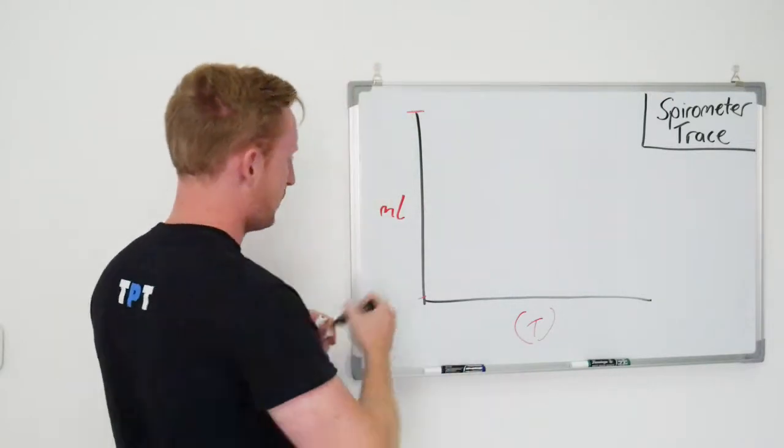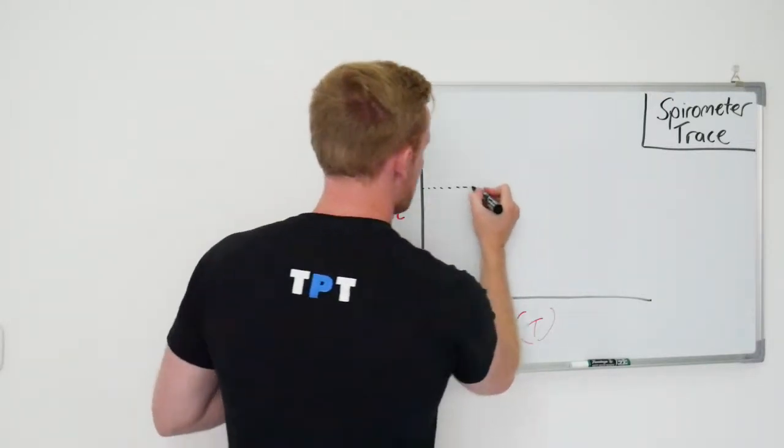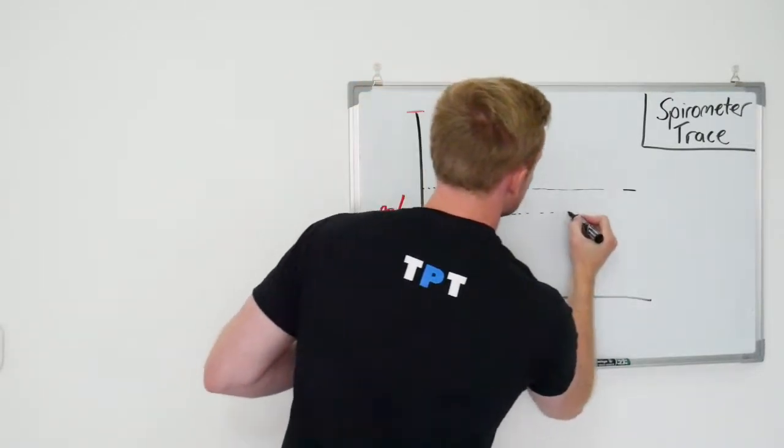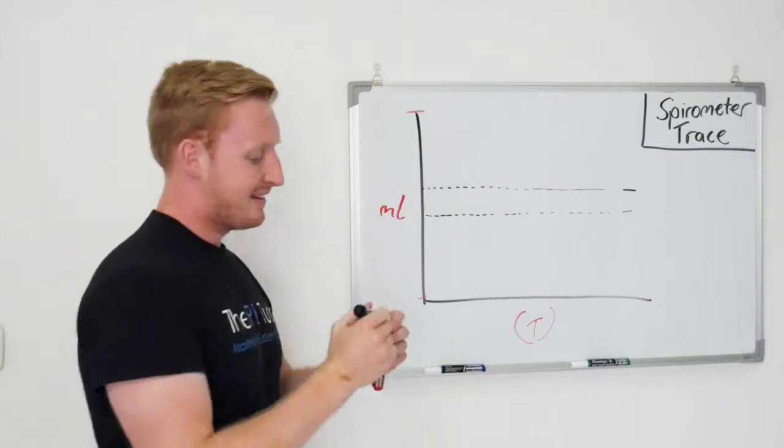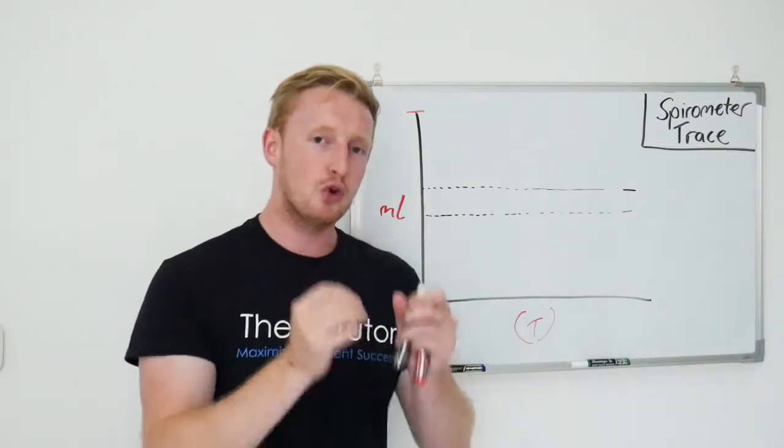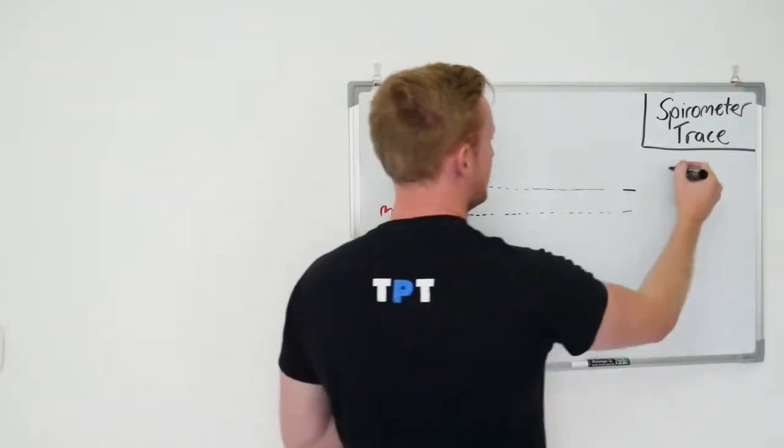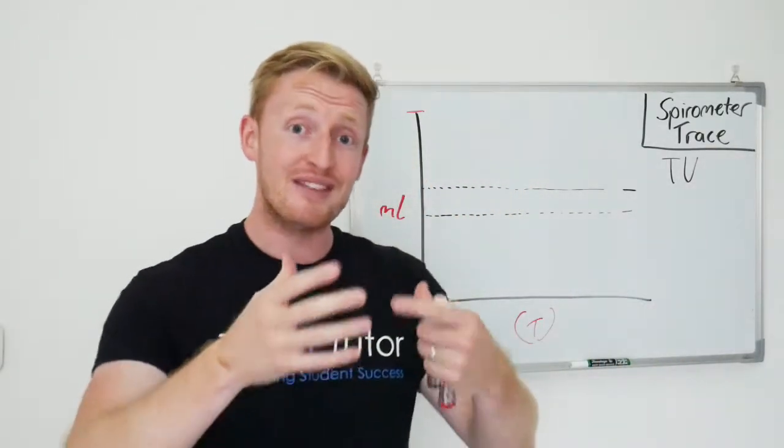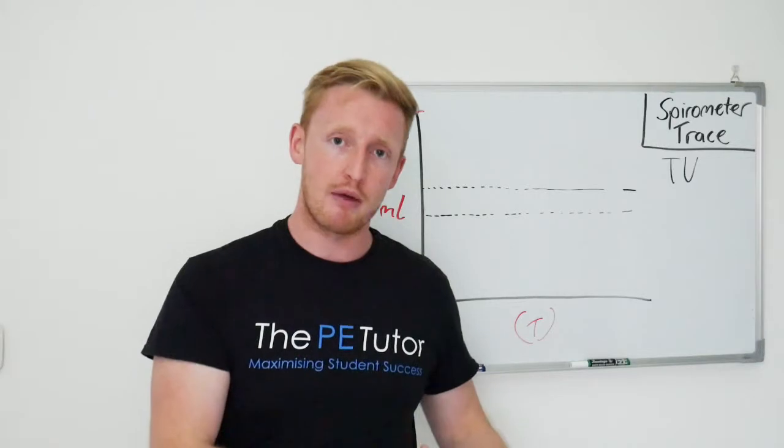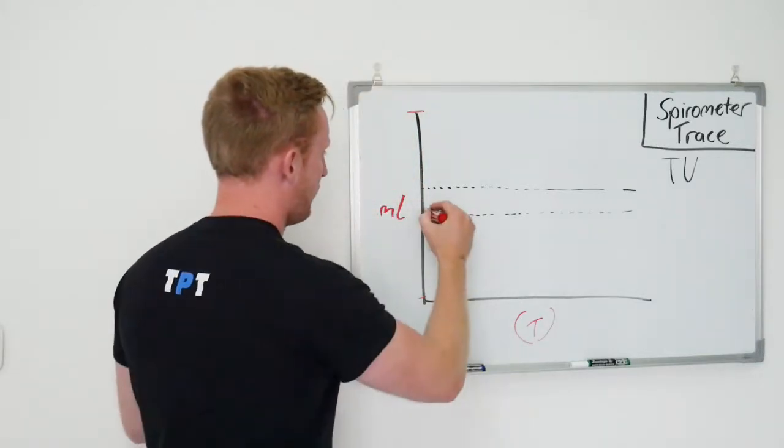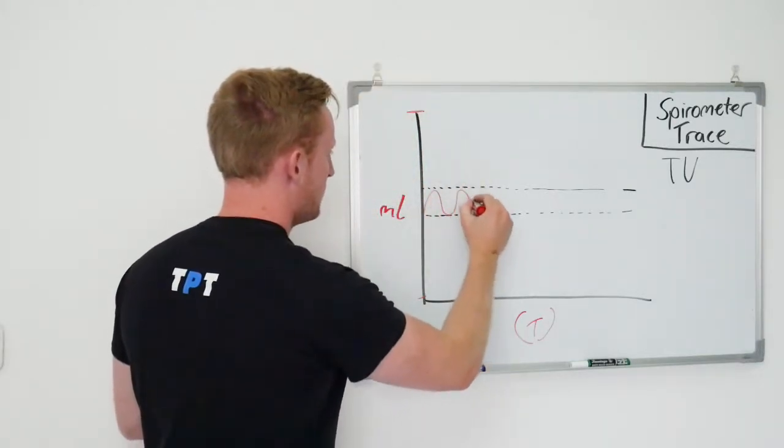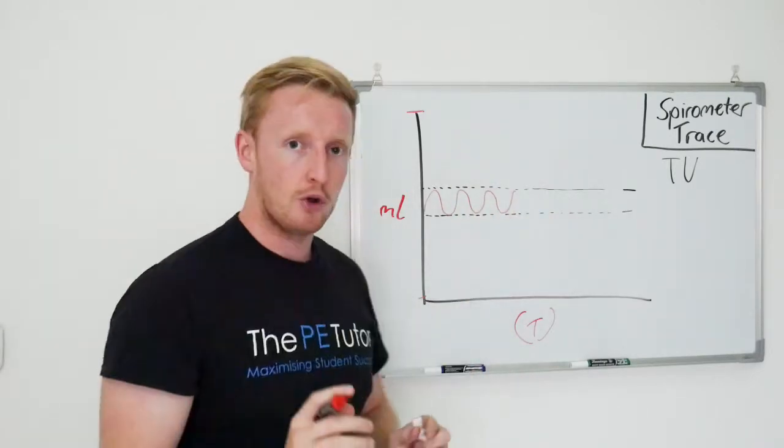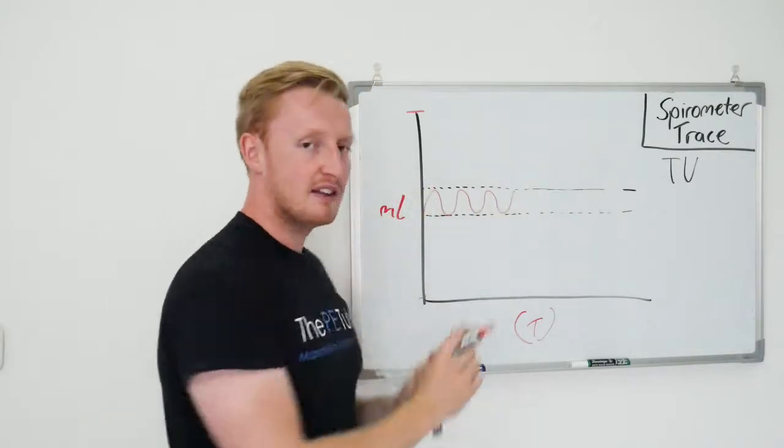So we're going to start off by putting on two new dashed lines. And what this represents is something called your tidal volume. I'm going to put TV in here. Your tidal volume is the amount of air that you breathe in or out in a normal breath. So at rest, your tidal volume is going to be very routine, and it will stay between those boundaries there, your resting tidal volume.